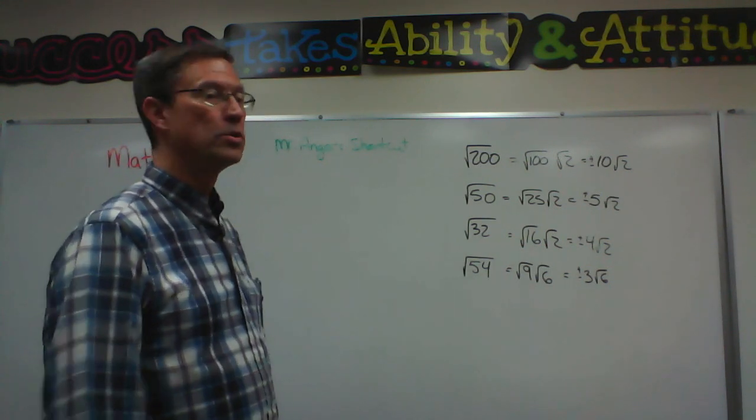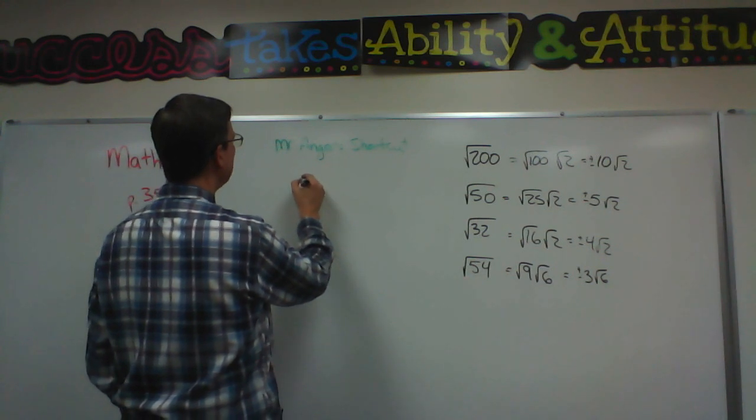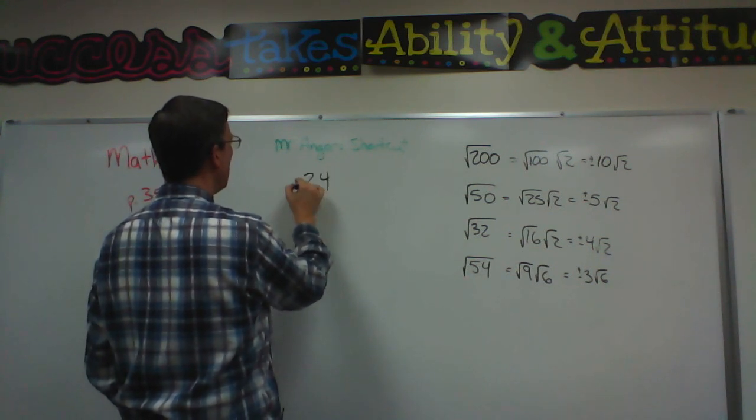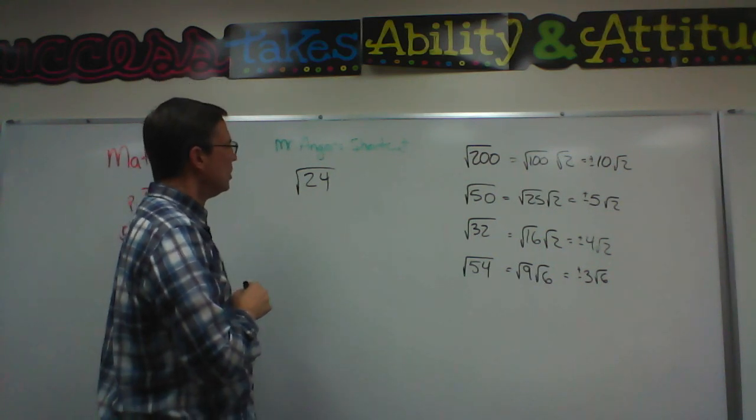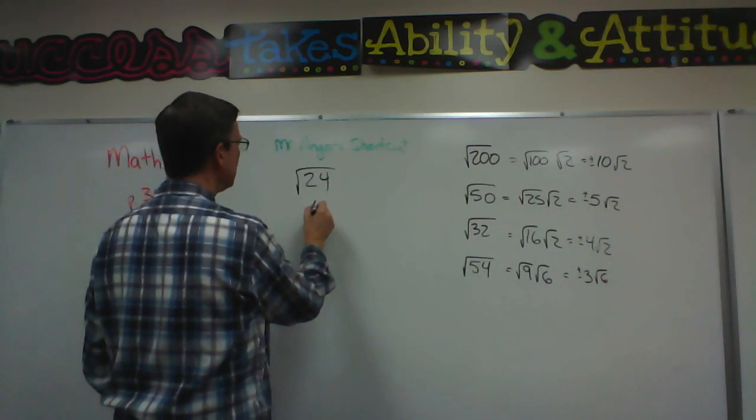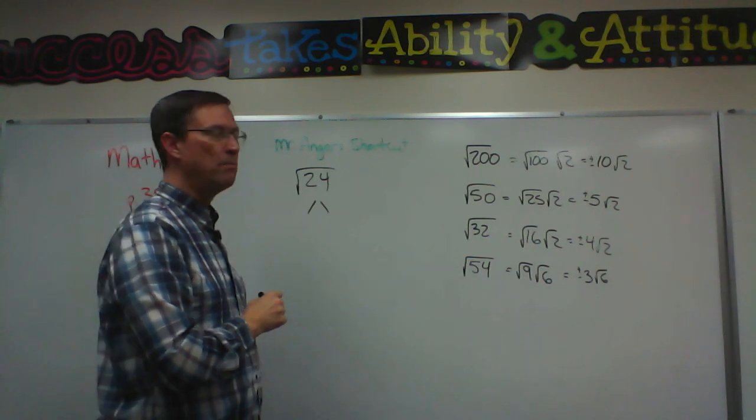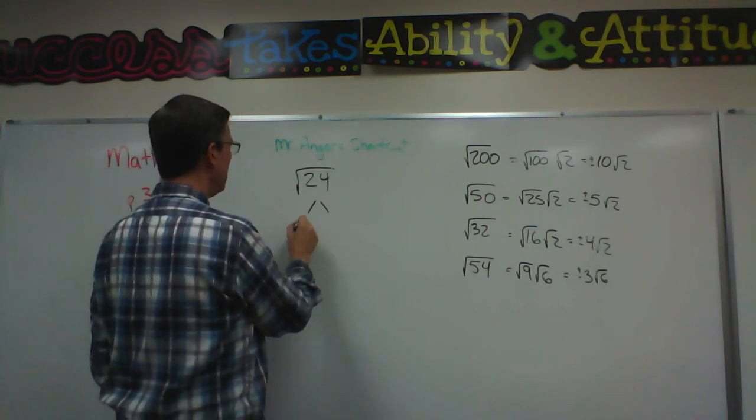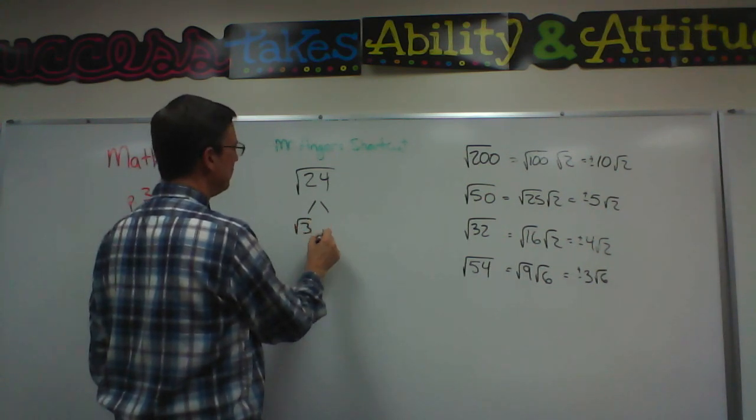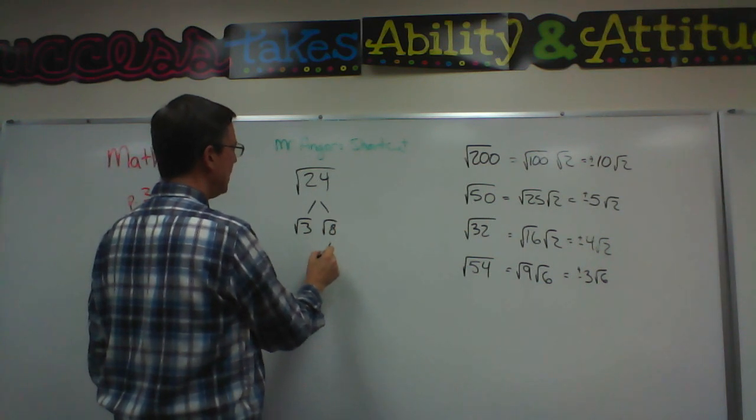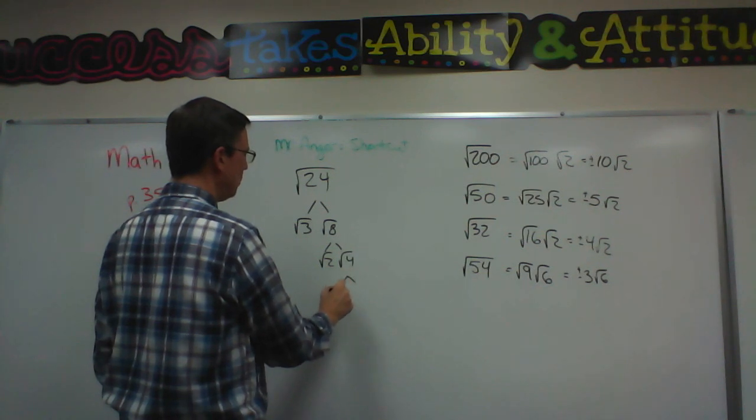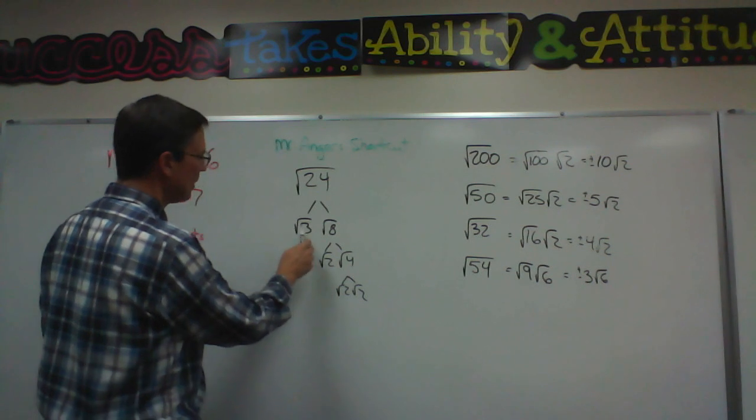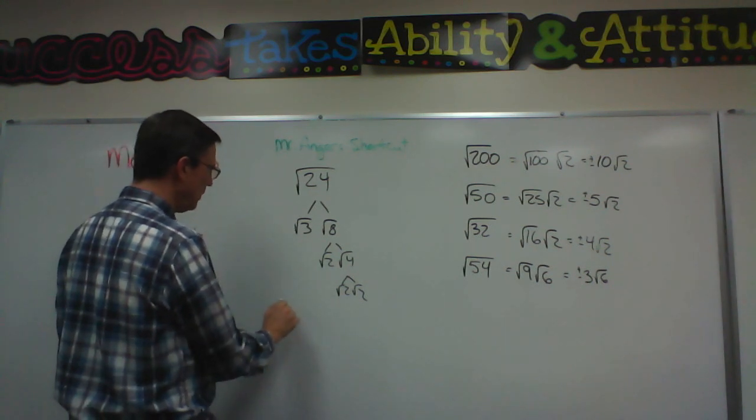Let me start as an illustration by taking the number 24 and I want to find the square root of 24. So what we do is we break this down to all the prime numbers that make up 24. First off I think of 3 times 8, but 8 can be broken down to be 2 times 4 and then 4 can be broken down to be square root of 2 times square root of 2.